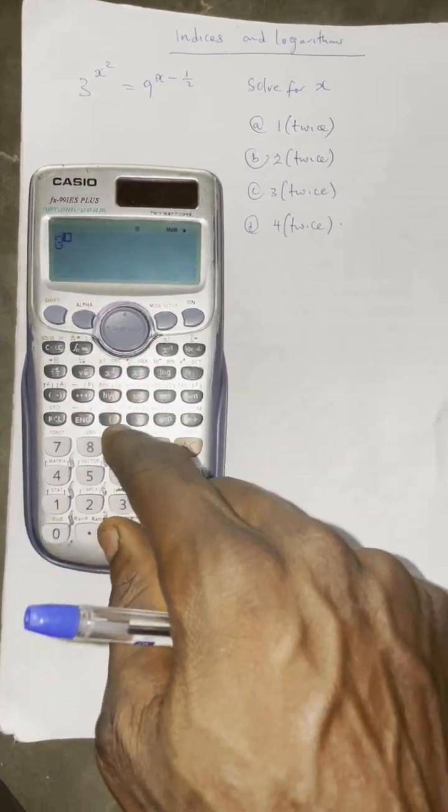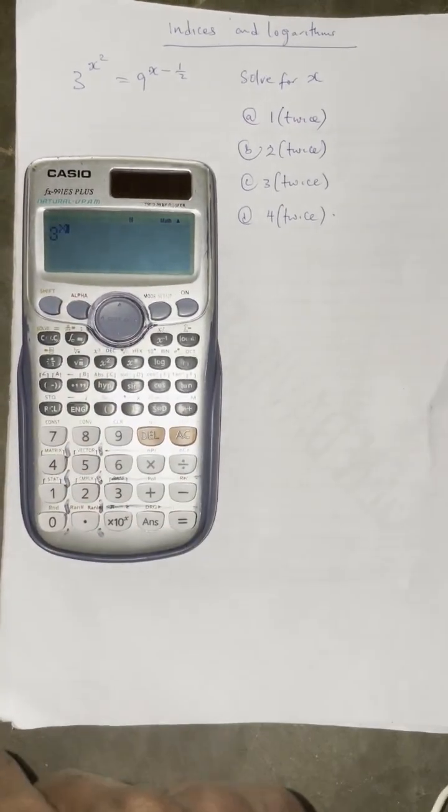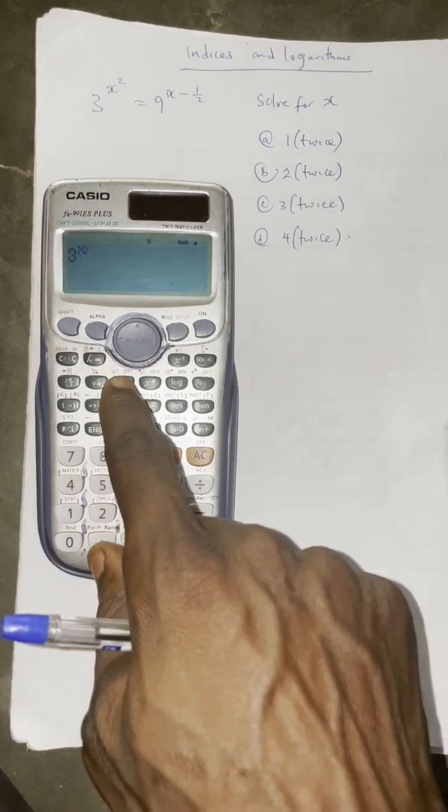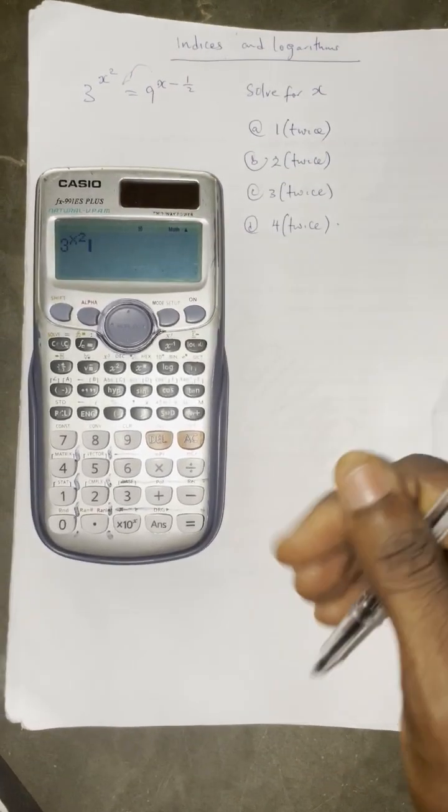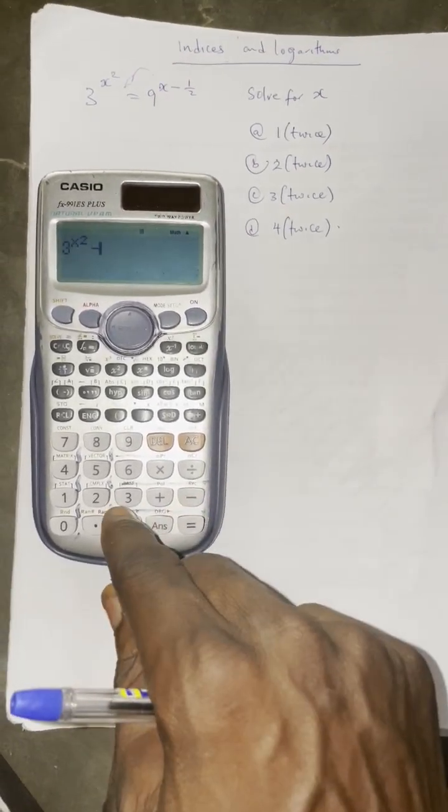Press 3, then press raise to power alpha x, which is shift close bracket. Press square, then come to this. Let us take this equation inside. Now we take it inside, it becomes minus, so now I have minus nine.